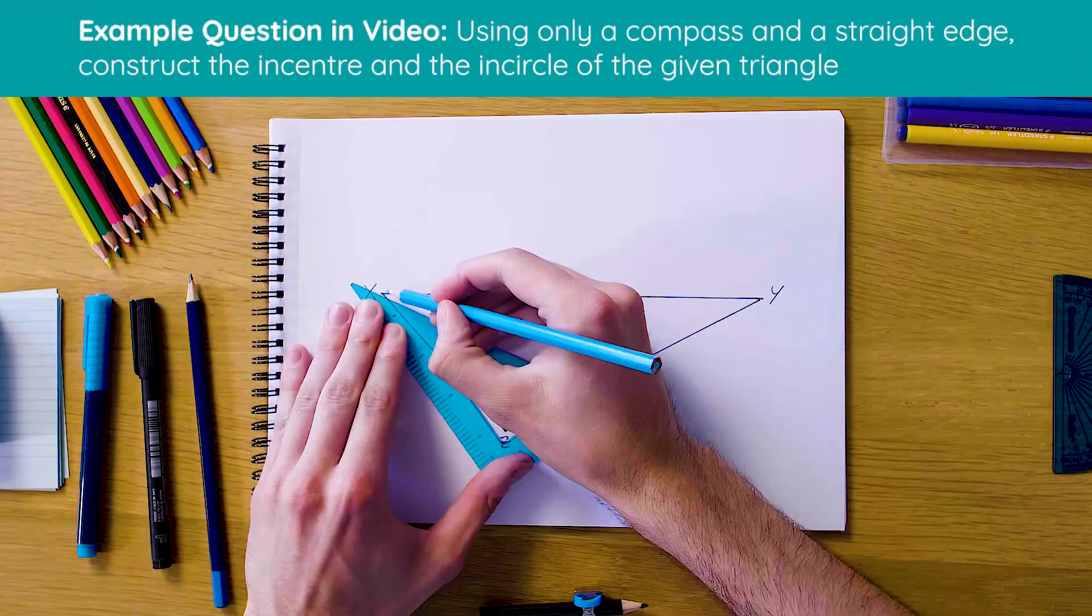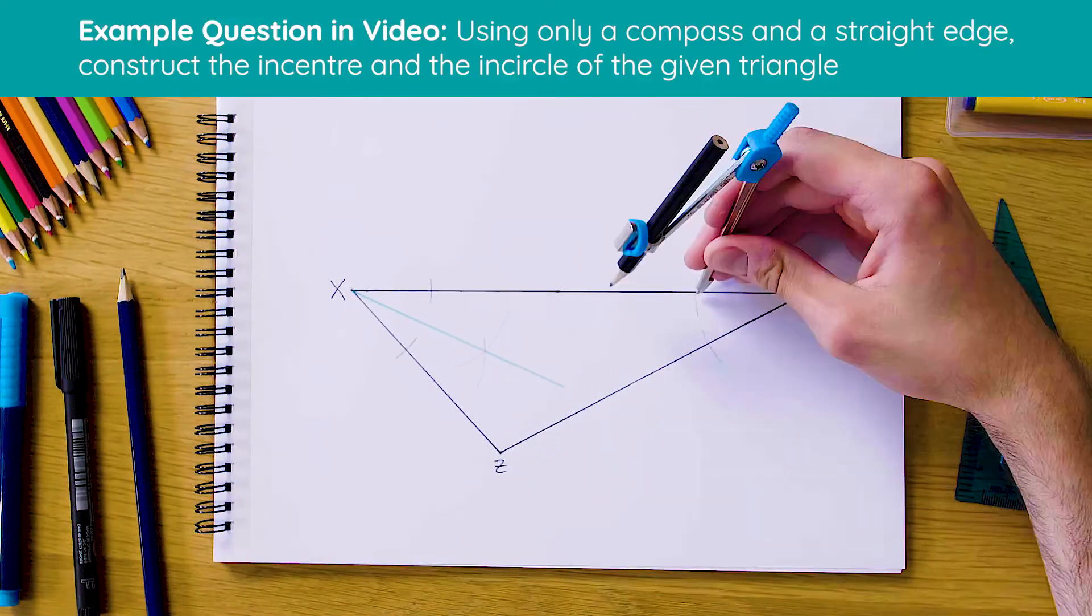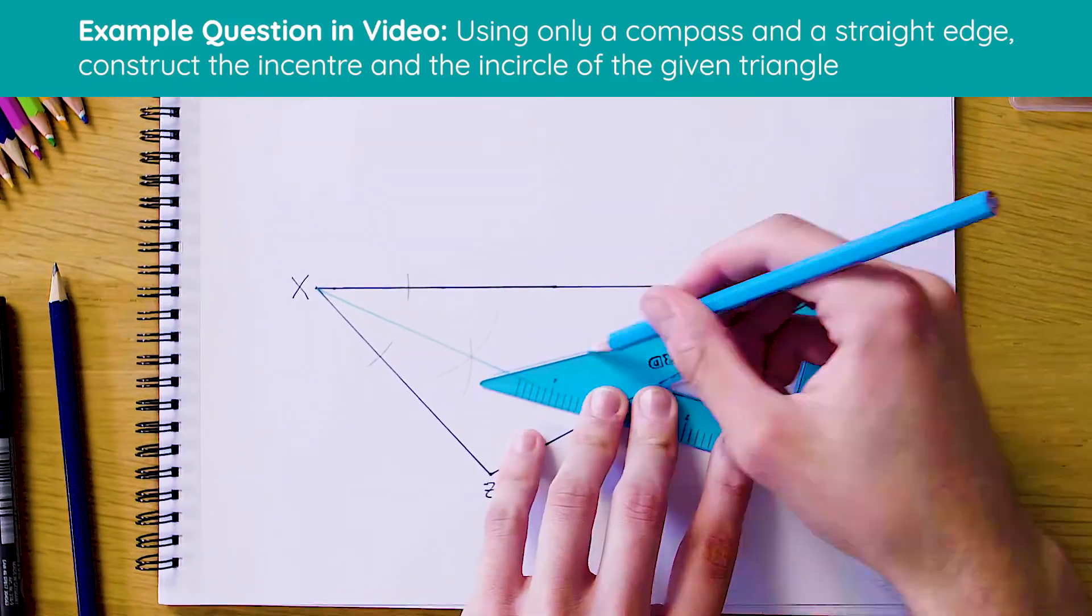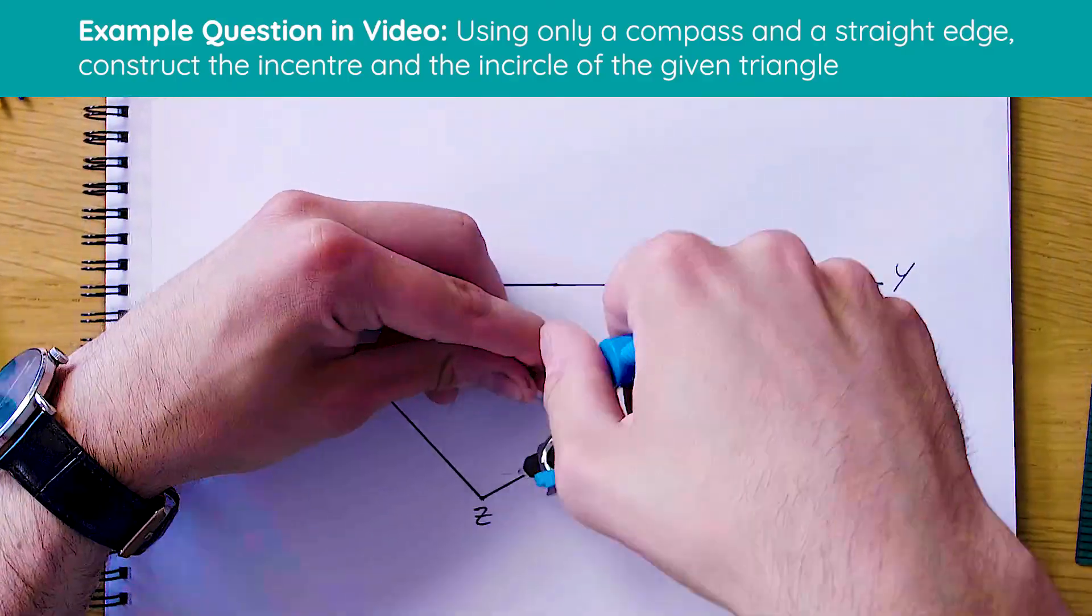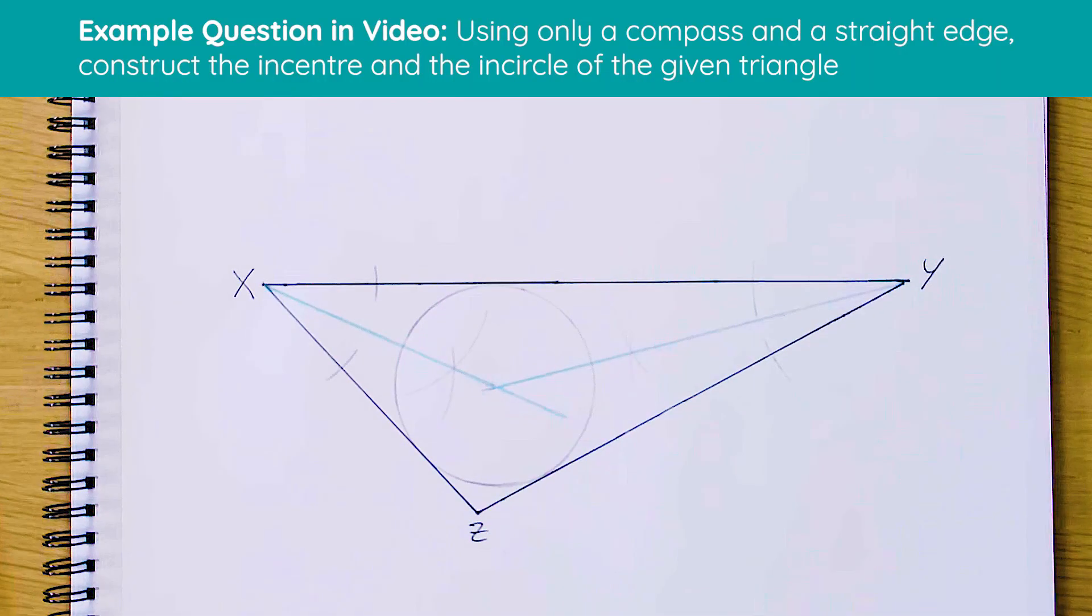Okay, so here is our finished incircle and incenter. As you can see, we've bisected our angles and where those two bisectors have crossed we drew our incircle. So let's see how this is done from scratch.